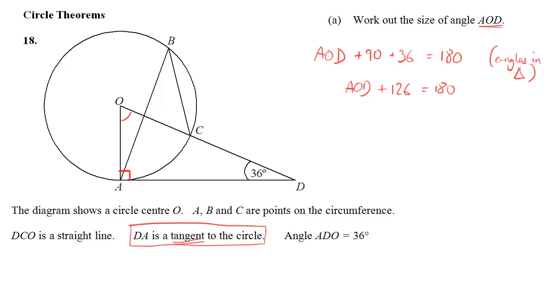AOD plus 126 is 180, so subtract 126 from 180, and we get angle AOD equals 54 degrees.